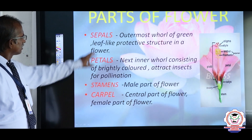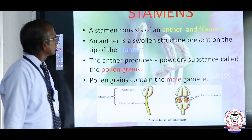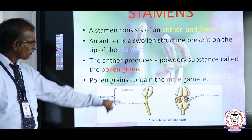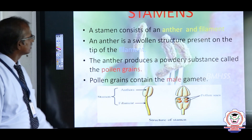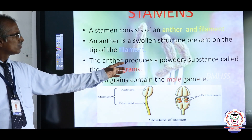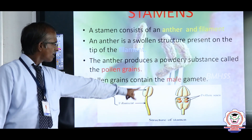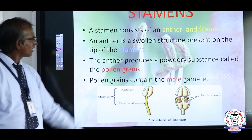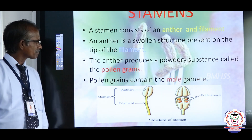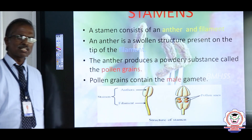A stamen consists of anther and filament. The anther is a swollen structure which is present on the tip of the filament. The anther produces a powdery substance called pollen grain. Pollen grain contains male gametes.